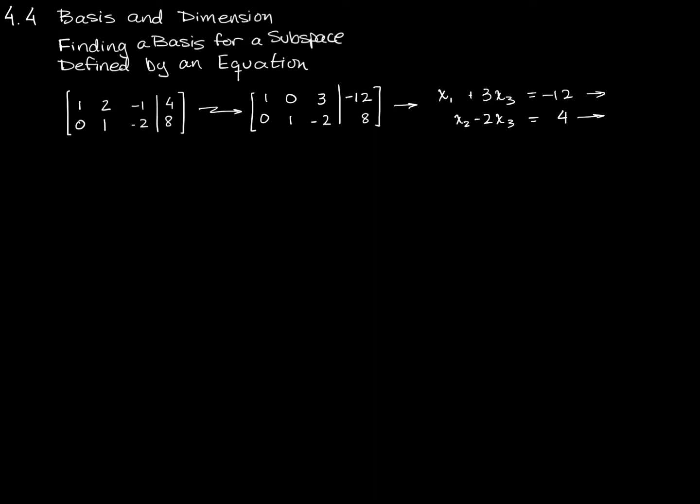A little algebra here. You can see that what each of these, what these two equations have in common is x3. So if I solve each equation for the other variable, not x3, in the first case, that's going to be solved for x1. And the second equation is x2 minus 2x3 equals 4. So in this equation, I'm going to be solving for x2. And what I'll get here is x1 is negative 3x3 minus 12.